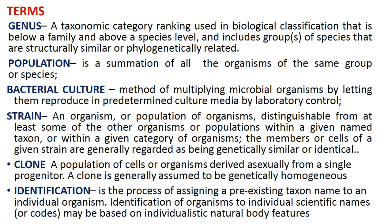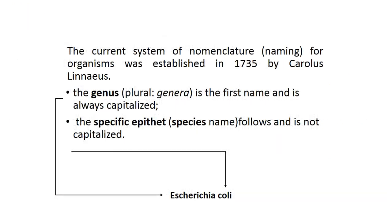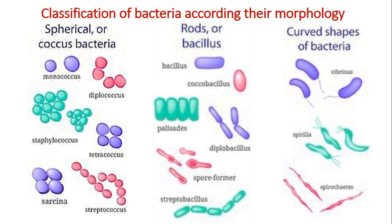Identification is the process of assigning a pre-existing taxon name to an individual organism. The current system of nomenclature for organisms was established in 1735 by Carl Linnaeus. We write the name of bacteria starting with the genus name, which is always capitalized, followed by the specific epithet, which is not capitalized. For example, Escherichia coli.